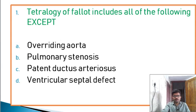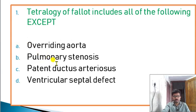Tetralogy of Fallot — this is 4 defects. We have 4 defects in detail: overriding aorta, pulmonary stenosis, ventricular septal defect, and right ventricular hypertrophy.